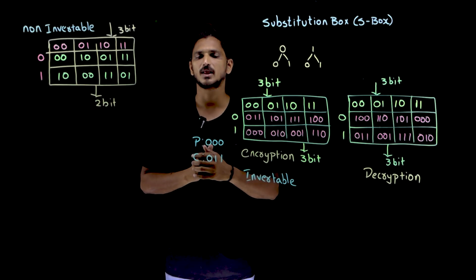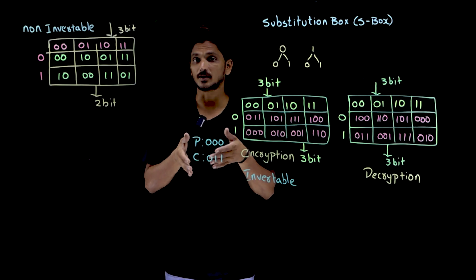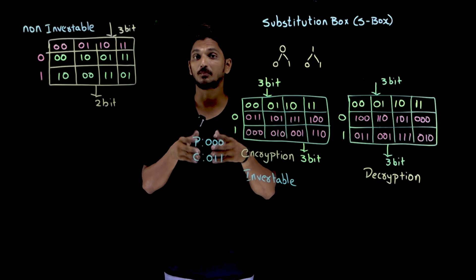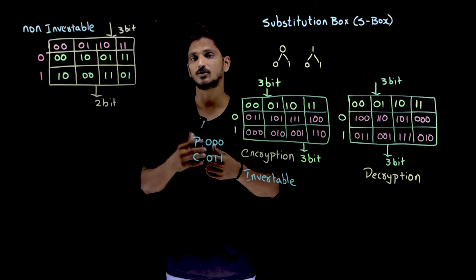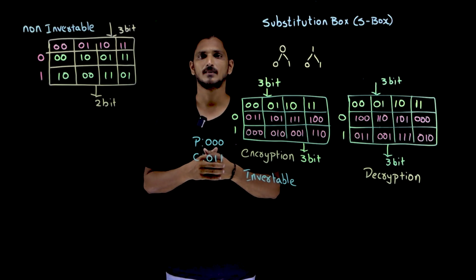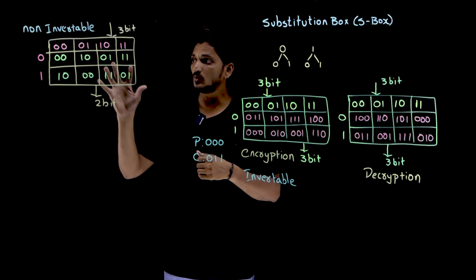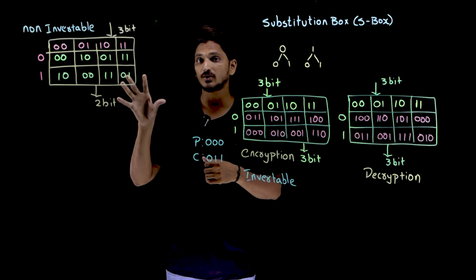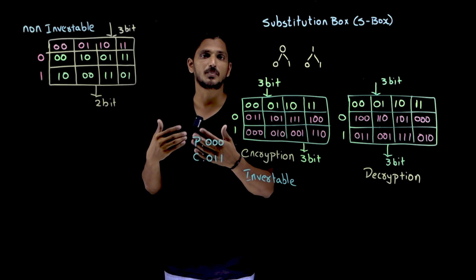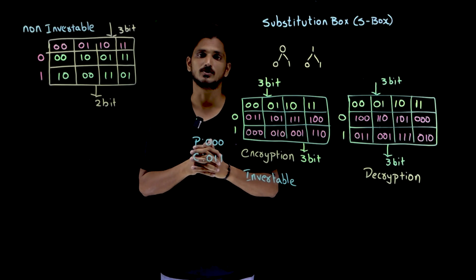Only 2 bits are replaced. This is compression substitution box. Compression p-box which we discussed in our previous class. So we are losing information. Even though we lose information, we are going to use this compression substitution box also.